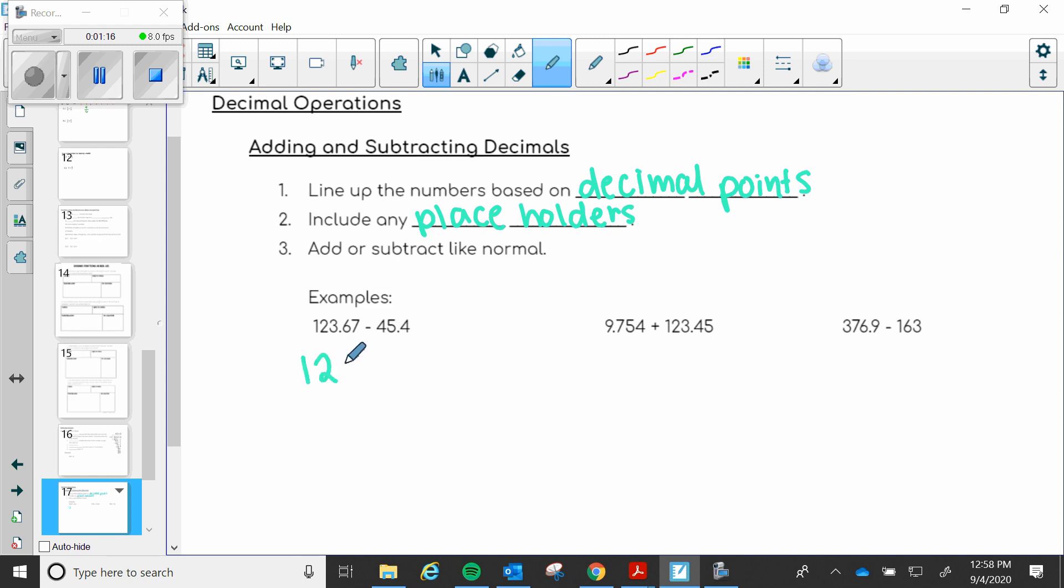So 123.67 minus, and go ahead and line up that decimal point and then you can write your numbers around it because it's so super important that the numbers all line up where they're supposed to based on the decimal point. Now going back to that step two. So we've got our numbers lined up based on the decimal point. Our decimal points are straight up and down right above each other.